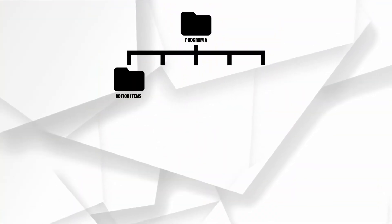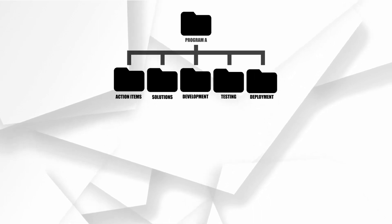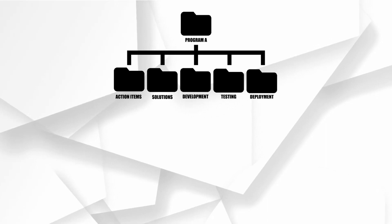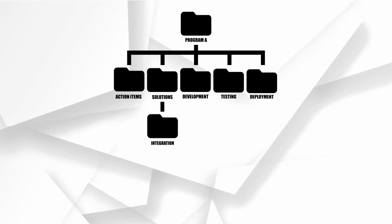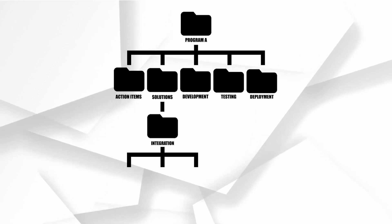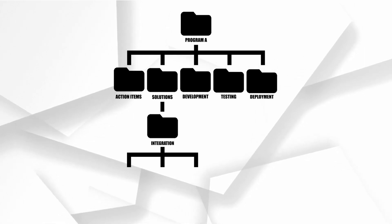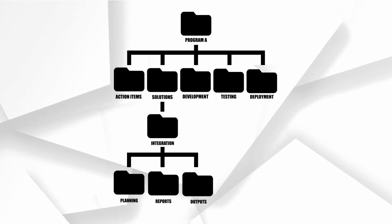Someone from your PMO team will create a major program folder with several subfolders: one for Action Items, one for Solution, one for Development, one for Testing, and one for Deployment. If you are working on the project in an integration role, you'll place your structure into the Solution folder. Inside there, place your integration folder, and inside that folder, organize it your way — but not in a messy way. Create folders for your planning, your reports, and your information exchange with peers.